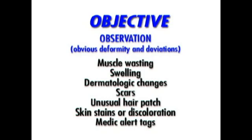There are also region-specific observational considerations that will be referred to in each respective scan. Once observation is finished, the hands-on objective scan begins. This consists of an articular evaluation, neurological conductivity and mobility testing, vascular tests, regional-specific special and/or stress tests, a peripheral joint screen as warranted, and lastly, palpation.